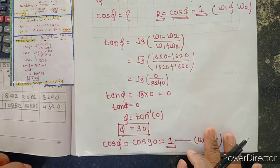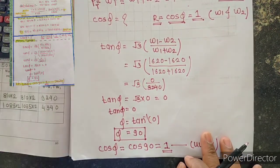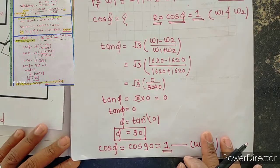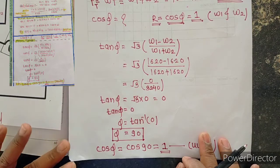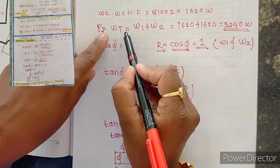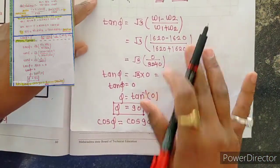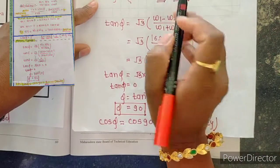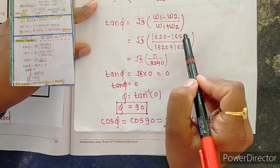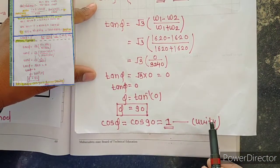We can conclude that we can measure three-phase power using the 2-wattmeter method, where total active power equals W1 plus W2. When a resistive load is connected, both wattmeters show the same readings, and the power factor is unity. Thank you.